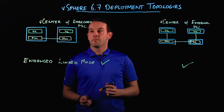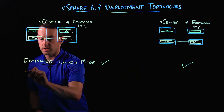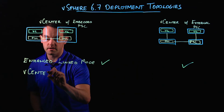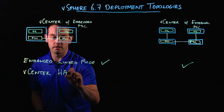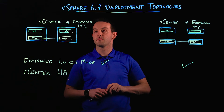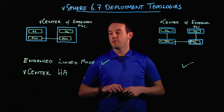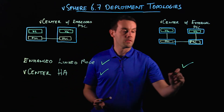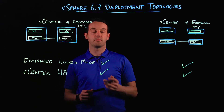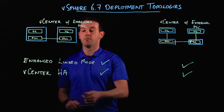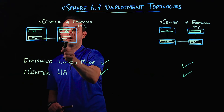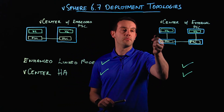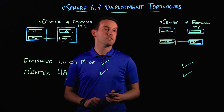The next thing to discuss is vCenter HA. vCenter HA, which launched with vSphere 6.5, provides high availability of your vCenter server instance. With vSphere 6.7, vCenter HA will be available in both topology modes, even if you're running vCenter server with an embedded PSC in Enhanced Link Mode. We can enable vCenter HA for both the embedded instances, and similarly with vCenter with an external PSC, we can enable vCenter HA for both of the vCenter instances.